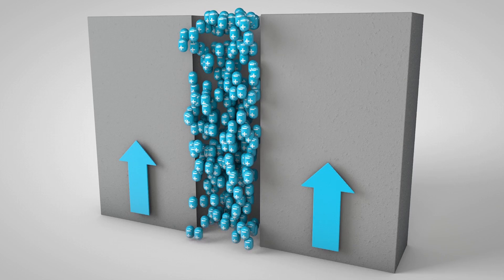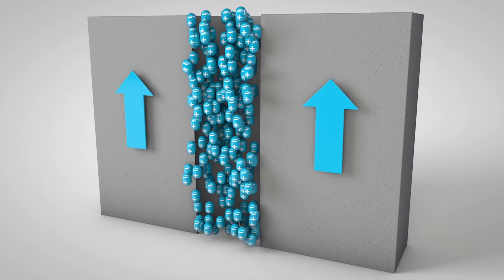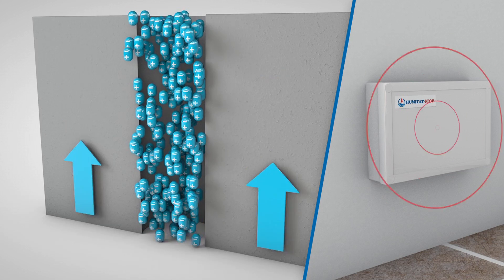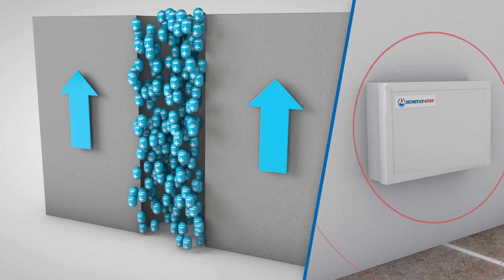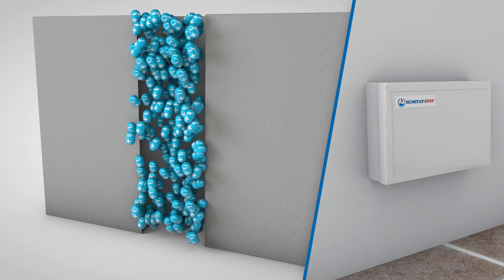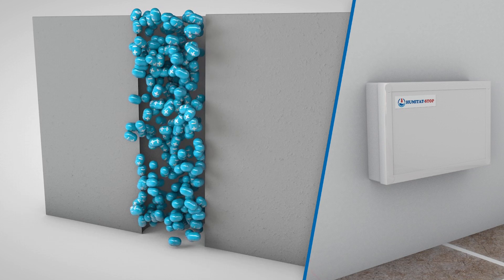The HS221 emits very low frequency waves, which penetrate the walls and floors of buildings and prevent the confluence of water molecules with the negative poles facing up.